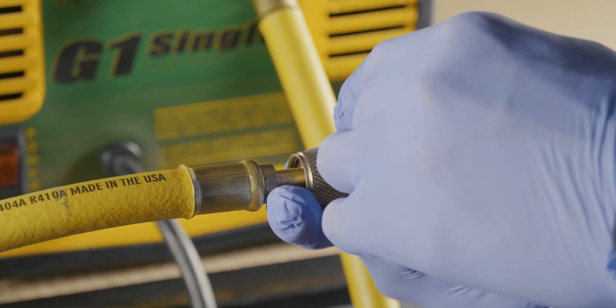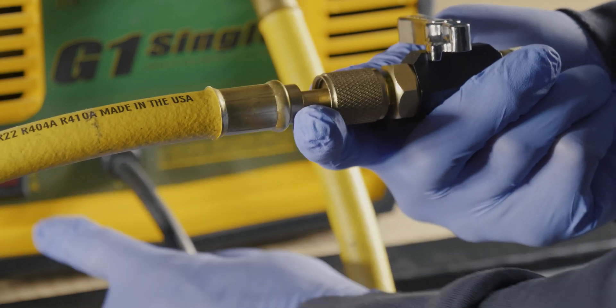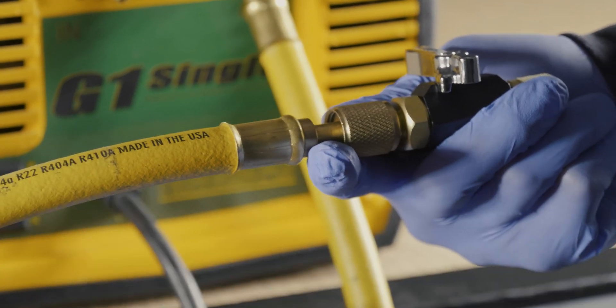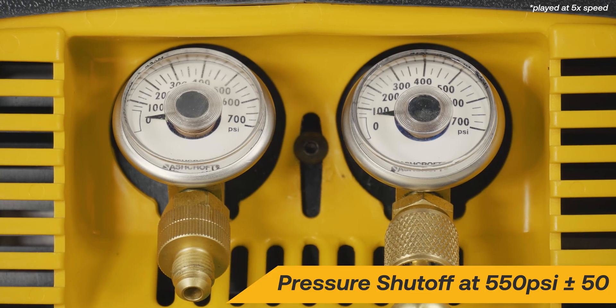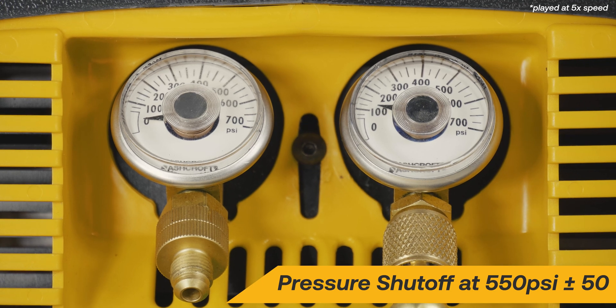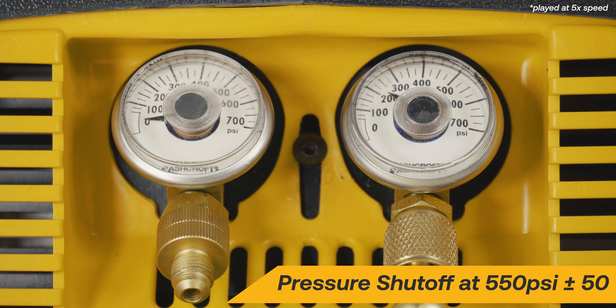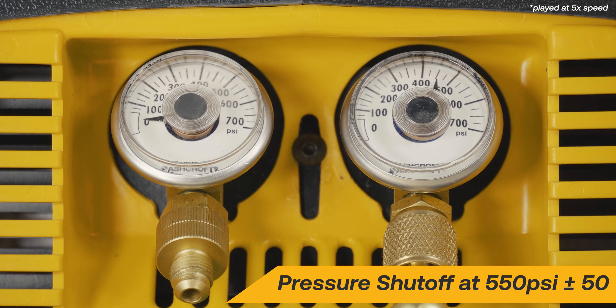Close the valve on the VCRT, then turn the machine on. The machine should build internal pressure and shut off at approximately 550 psi in roughly 60 seconds.